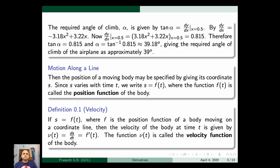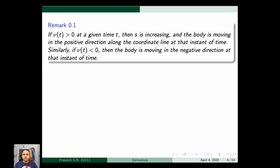We assume that the body is moving through a coordinate s. The velocity v(t) = ds/dt = f'(t). If v(t) > 0 at a given time t, then s is increasing and the body is moving in a positive direction along the coordinate line at that instant. If v(t) < 0, then the body is moving in a negative direction at that instant of time.